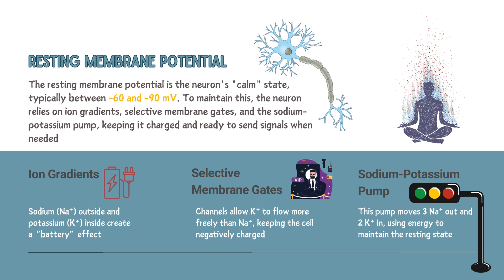Two: selective membrane gates — the neuron's membrane acts like a bouncer, selectively allowing potassium to move more freely while restricting sodium, keeping the inside charge negative. Three: the sodium-potassium pump — this energy-driven pump expels three sodium ions for every two potassium ions it takes in, maintaining the calm negative resting state like a car idling, ready to move. These systems keep neurons poised and ready to fire whenever needed.